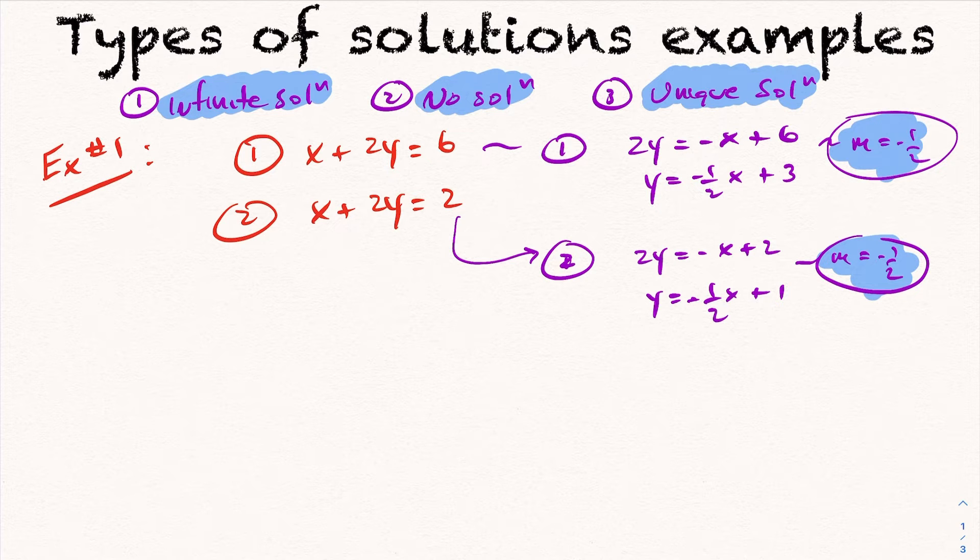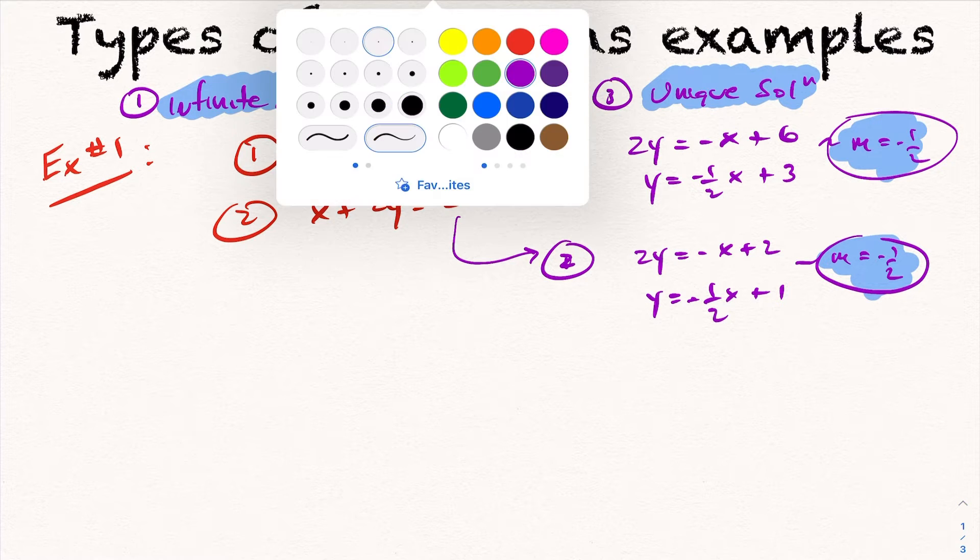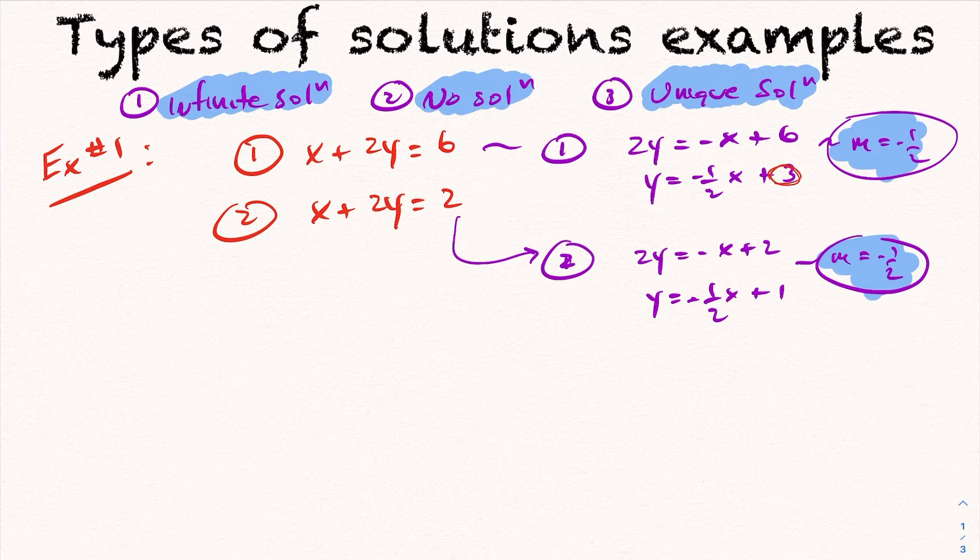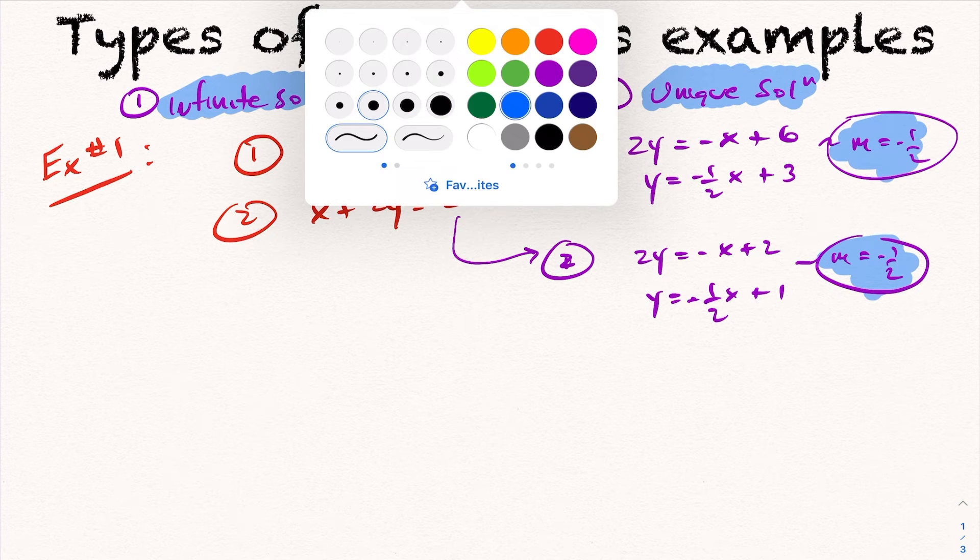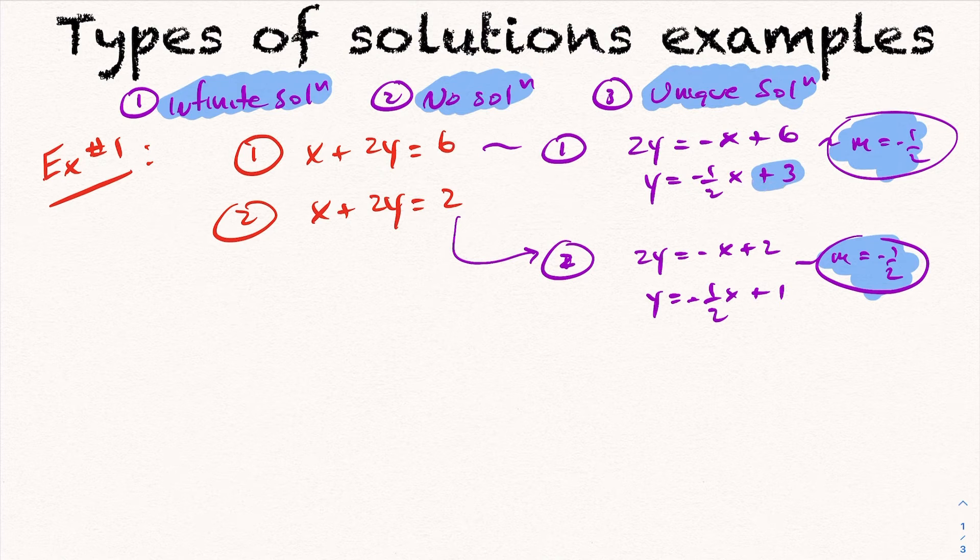So these lines are parallel, but as you can see here, they're parallel and distinct. And by that, I mean they have different y-intercepts. One has a y-intercept of three, the other has a y-intercept of one.